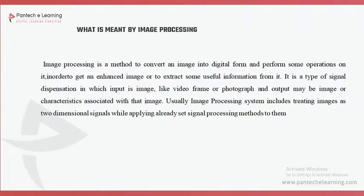Now we are going to learn what image processing means — this is our main topic. Image processing is when you take an image, apply some algorithms or techniques on it, and get an output. That output may be an image or some information extracted from the input image. For example, in Photoshop you give an image, apply filters or change the background, and get one output — this is a similar operation to image processing.